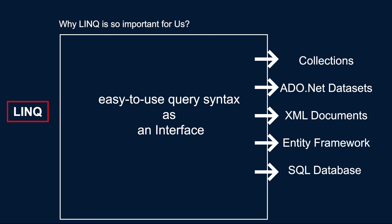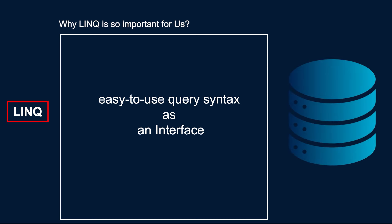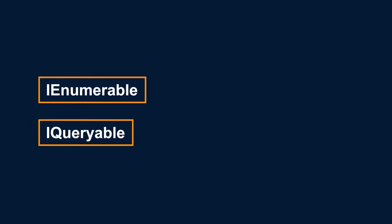In the previous lesson, we talked about an interface that LINQ uses to work with different types of data sets. Normally, we use two different types of interfaces: iEnumerable and iQueryable. Let's go and see what these two different interfaces are in the Microsoft documentation and talk about them.